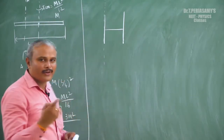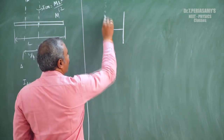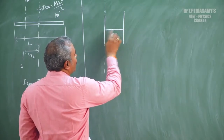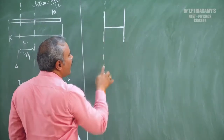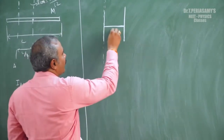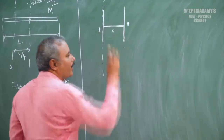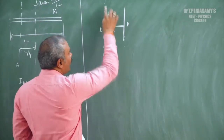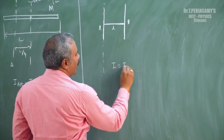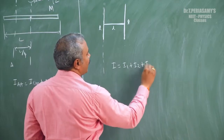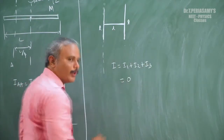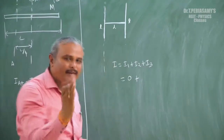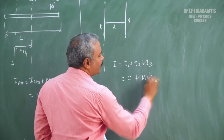If you have a moment of inertia for each rod about this axis, the total is I = I1 + I2 + I3. With respect to this axis, I1 is 0. I2, since one end is fixed on the axis, equals mL squared by 3.